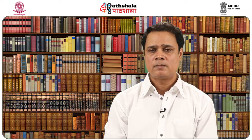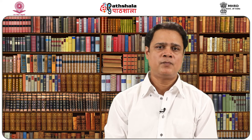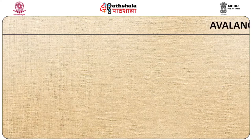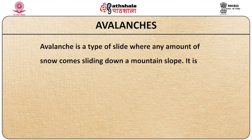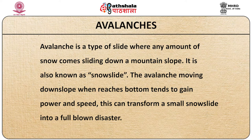Another major geomorphic hazard is avalanches. An avalanche is a type of slide where a large amount of snow comes sliding down a mountain slope. It is also known as a snow slide. The avalanche moving downslope tends to gain power and speed as it reaches the bottom, which can transform a small snow slide into a full-blown disaster.